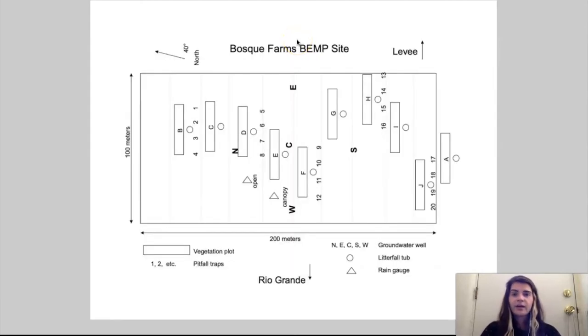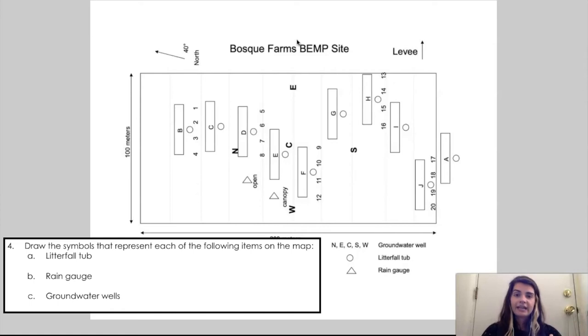This is what our maps look like and what you'll use to get around the site and familiar with our equipment. We have our groundwater wells listed, rain gauges, and litterfall tubs, plus a few other things. At each site we have five groundwater wells, ten litterfall tubs, and two rain gauges. Take a moment to look at this map and answer your map question about the symbols for each thing.